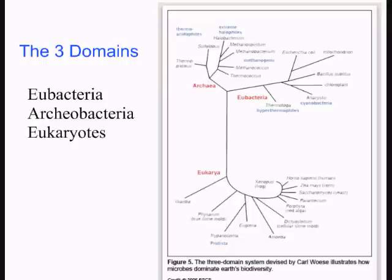Those three domains are, as you can see right in front of you: eubacteria, archaeobacteria, and eukaryotes. Eukaryotes would include the kingdoms of animals, plants, protista, and fungi. Eubacteria and archaeobacteria would be what we previously knew as monera or bacteria.